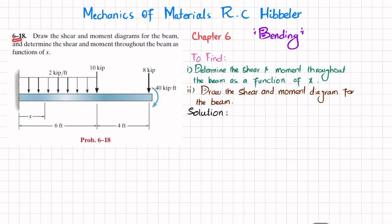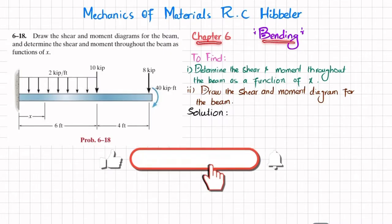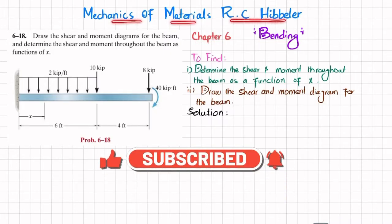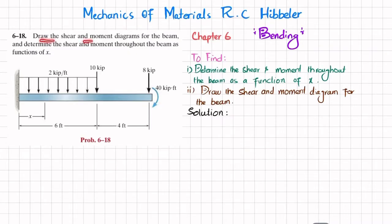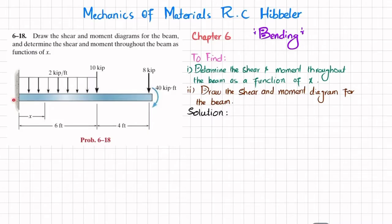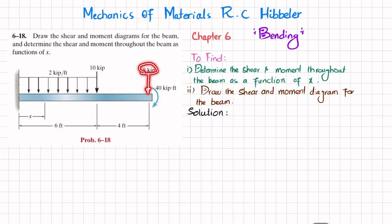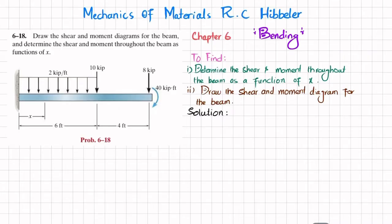Welcome back. Problem 6-18 is taken from chapter 6 on bending from the book 'Mechanics of Materials' by R.C. Hibbeler. The problem states: draw the shear and moment diagram for the beam and determine the shear and moment through the beam as a function of x. This is a cantilever beam acted upon by a uniformly distributed load over a length of 6 feet, a point load of 10 kips at 6 feet, a point load of 8 kips at the free end, and an external moment of 40 kip-feet.